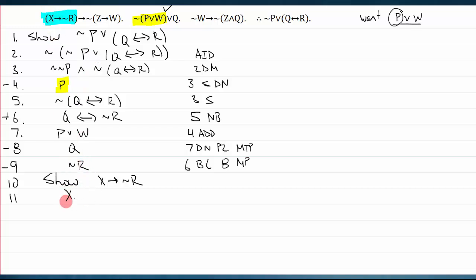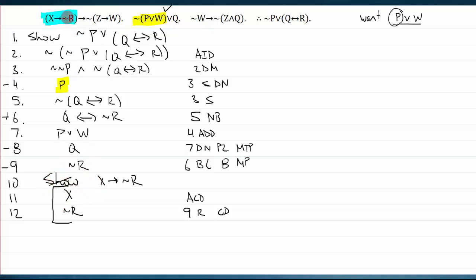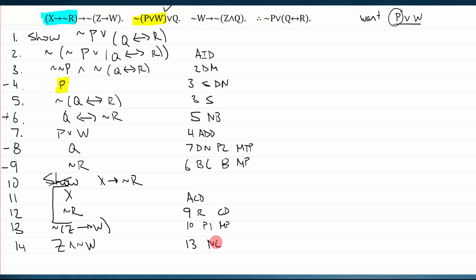I assume x — that's assumed conditional for conditional derivation. Then on the next line I realize I want not R, but I already have not R. So I write not R, citing it as a repeat, and that completes the conditional derivation. Under the assumption of x I was able to show not R — this seems like cheating, but that's the point: once I knew I needed to show this, actually showing it was easy. Now I have x arrow not R. I run modus ponens to get not bracket z arrow w, and then I apply negation of conditional: I affirm the antecedent and deny the consequent. I've used premise one.